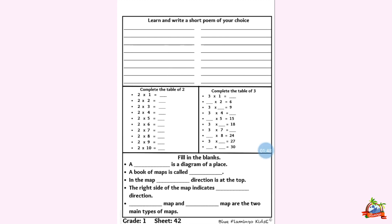Now, let's move to the next section of this sheet: Maths. Complete the table of two. Two ones are two. Two twos are four. Two threes are six. Two fours are eight. Two fives are ten. Two sixes are twelve. Two sevens are fourteen. Two eights are sixteen. Two nines are eighteen. Two tens are twenty. This was the table of two.